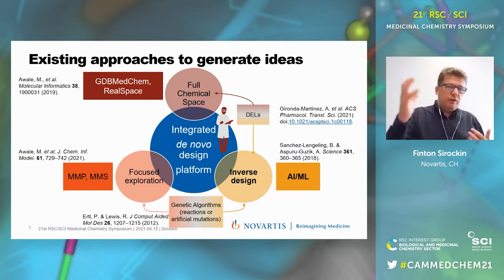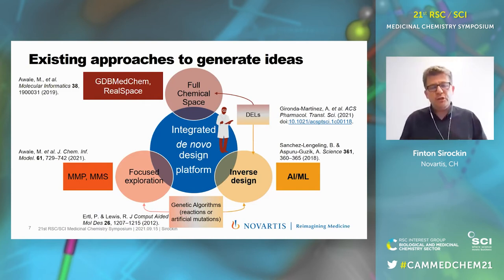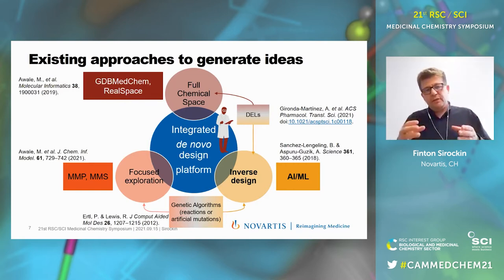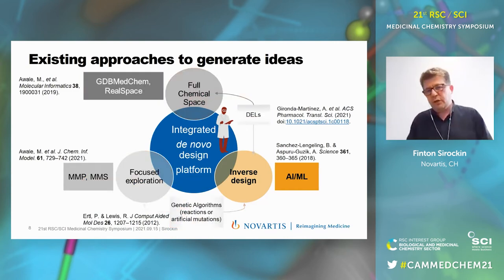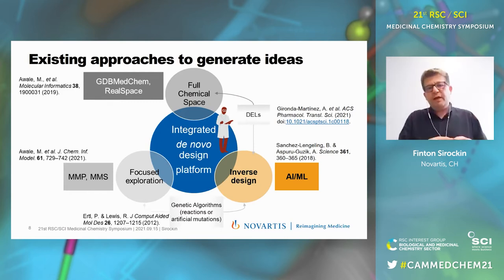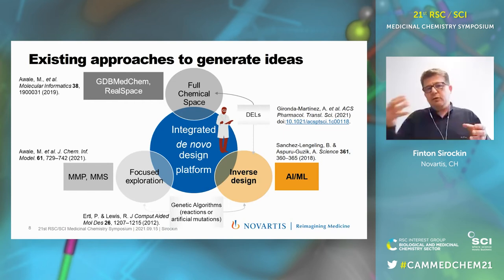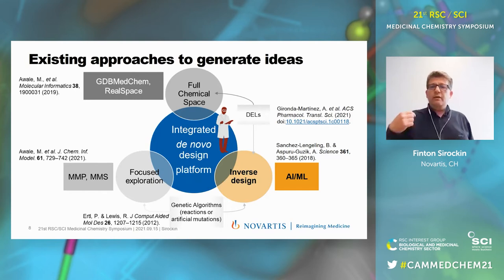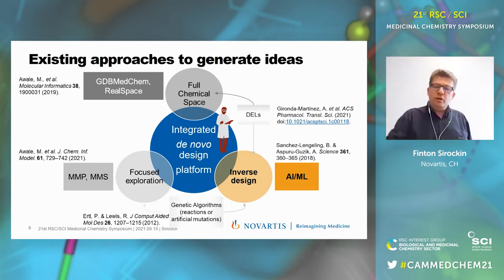The common point between full chemical space evaluation and focused exploration is that they start from molecules — invented, created, or generated by combinatorial approaches — and then filter them using properties. Today we focus on so-called inverse design: methods that start from the desired property profile relevant for the MedChem project and create molecules from that profile. Most of these methods are based on machine learning, and here we are exploring generative chemistry methods based on deep neural network generator models combined with multi-parametric optimization.